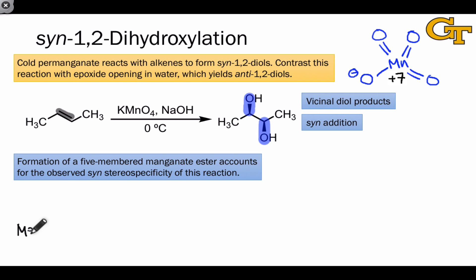Mechanistically, we can account for the syn addition by invoking the formation of a cyclic ester called a manganate ester. To generate this intermediate, a kind of cyclic electron flow occurs.